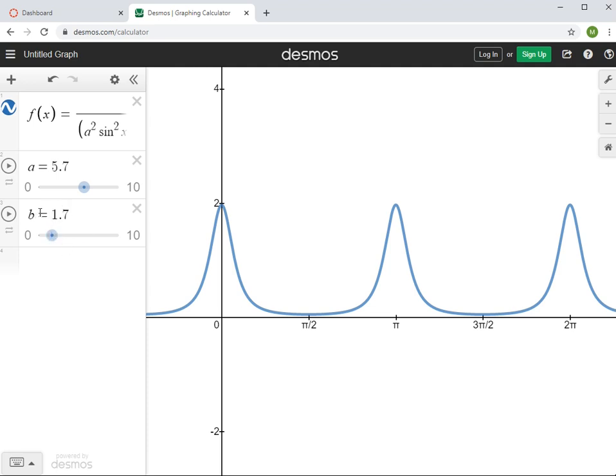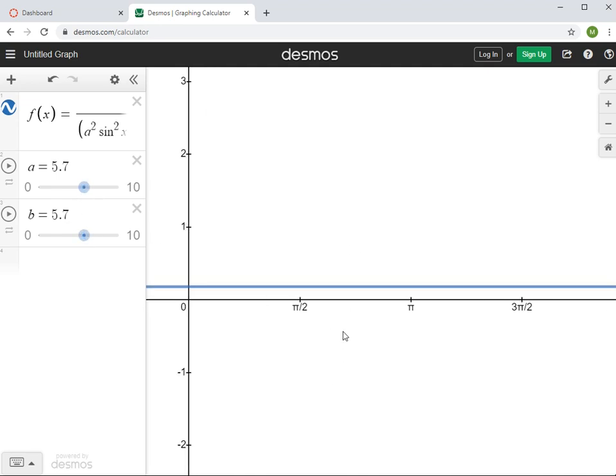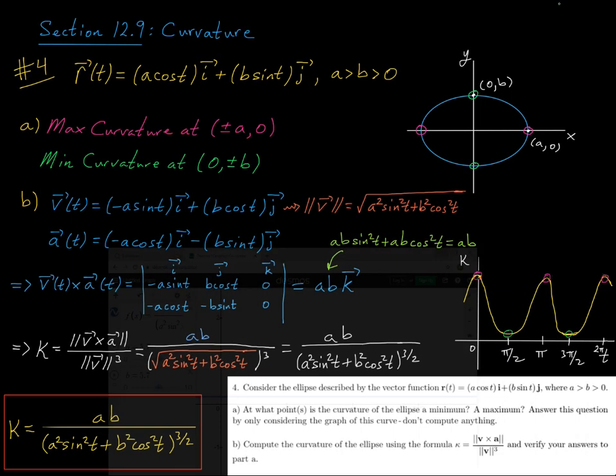Now what happens if we let the value of b approach the value of a? Well, it appears that the curvature function's graph approaches a straight line, so there they're exactly equal, 5.7, and I just get a constant function. So what's going on there?